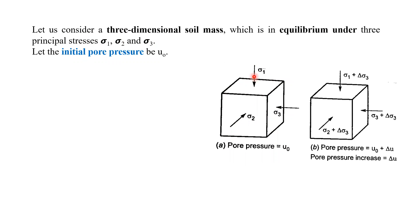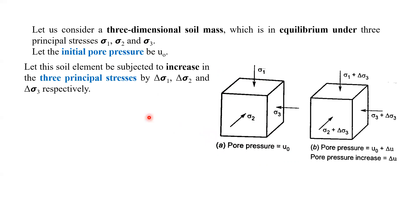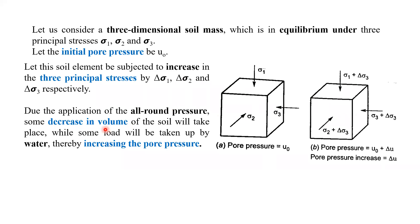Once we apply the principal stresses by increments delta sigma-1, delta sigma-2, delta sigma-3 on the soil element, what happens? Due to the application of all-round pressures, some decrease in volume of the soil will take place, while some load will be taken up by the water, thereby increasing the pore pressure.